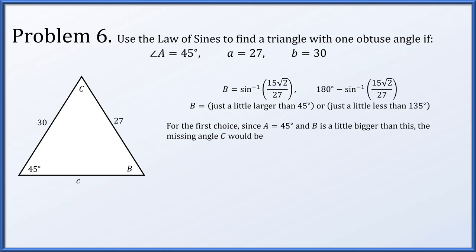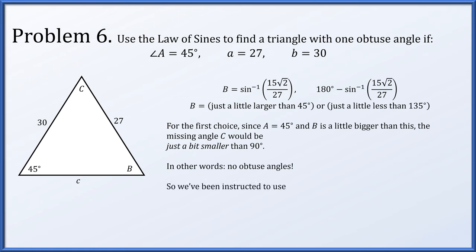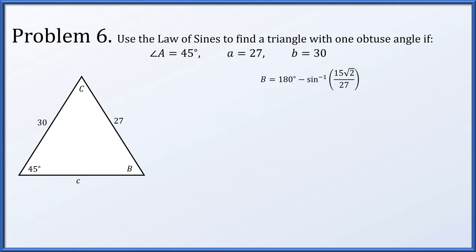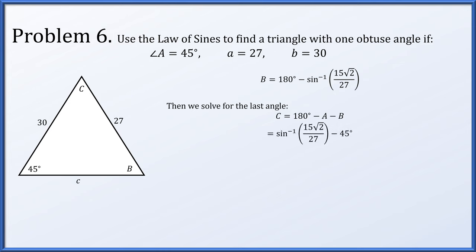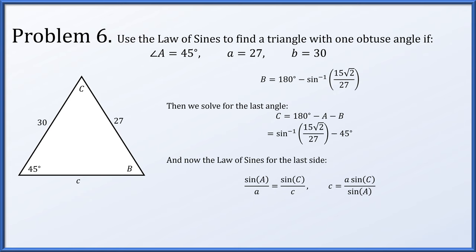With the first choice for B — just over 45 degrees — angle A is 45 degrees, angle B is a little more than 45, so the missing angle C would be a little less than 90 degrees. That triangle would have no obtuse angles. So we're instructed to use the other one: 180 degrees minus the arcsine of 15 root 2 over 27, a little less than 135 degrees — there's our obtuse angle. Then the last angle C is arcsine of 15 root 2 over 27 minus 45 degrees, and the law of sines gives us side length c.